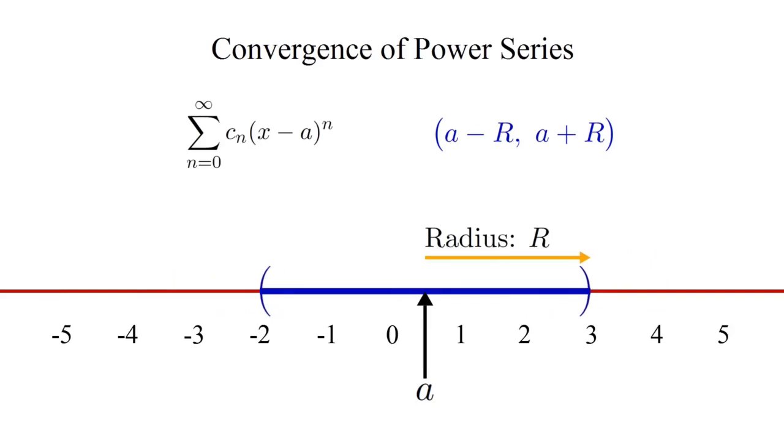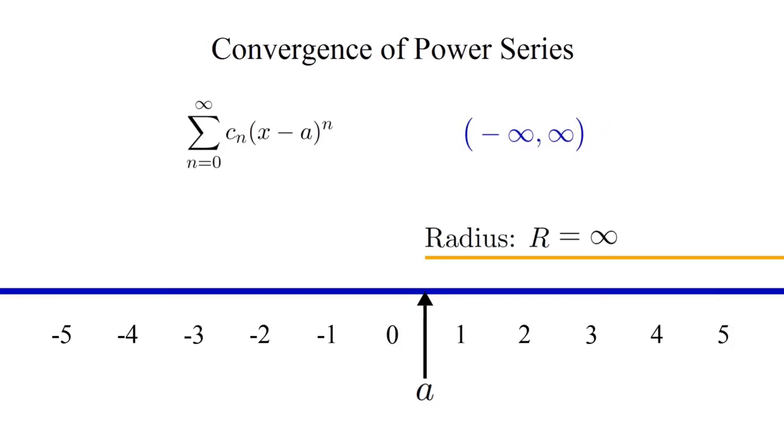In fact, it turns out the radius can even be infinite or zero, again depending on the exact values of the coefficients. R equals infinity means the interval of convergence is the entire real number line, from negative infinity to positive infinity.